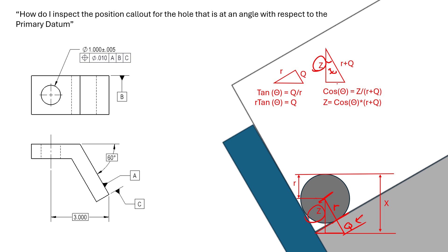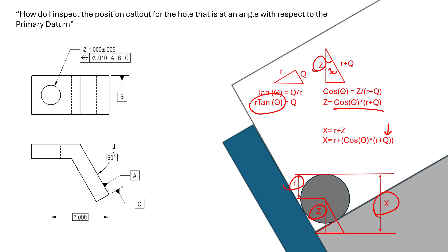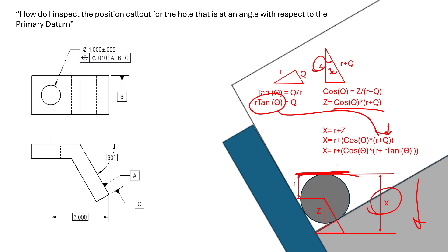We can rearrange to get z = cosine(θ) × (r + q). Then x equals r + z, so: x = r + cosine(θ) × (r + q). We also know q from our earlier calculation, so we can substitute: x = r + cosine(θ) × (r + r·tan θ). These are all known variables — we know r and we know the angle — so we can calculate x using this formula.